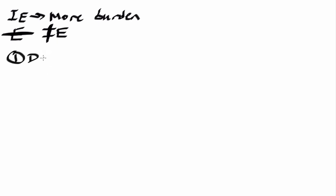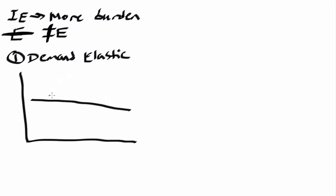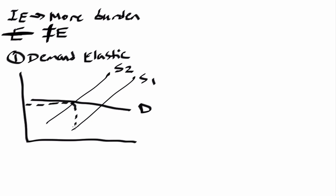Let's look at a situation in which demand is elastic. We have our standard axes, and our demand curve is going to be relatively flat like an E, because it's elastic. Then we have a supply curve that shifts upward from S1 to S2. We can think about where the intersection of supply and demand is in these two scenarios. The original intersection gives us P0, and the new one is P1. Even though the seller is charging a higher price at P1, they're actually going to receive a lower amount after the tax, which is P2. This entire region represents the total tax revenue.